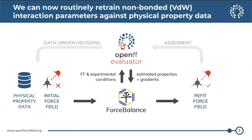In addition to having this refitting pipeline, we can now routinely take our refit force fields and use the Evaluator framework to benchmark them against large test sets of physical property data, gain insights into where the limitations in our force fields may be, and then take those insights to make data-driven decisions about what changes might be needed to our force field functional model — maybe we don't have enough chemical environment types, or our training data set is deficient in certain areas. We can now do these cyclical, self-consistent optimization epochs with almost no human intervention.